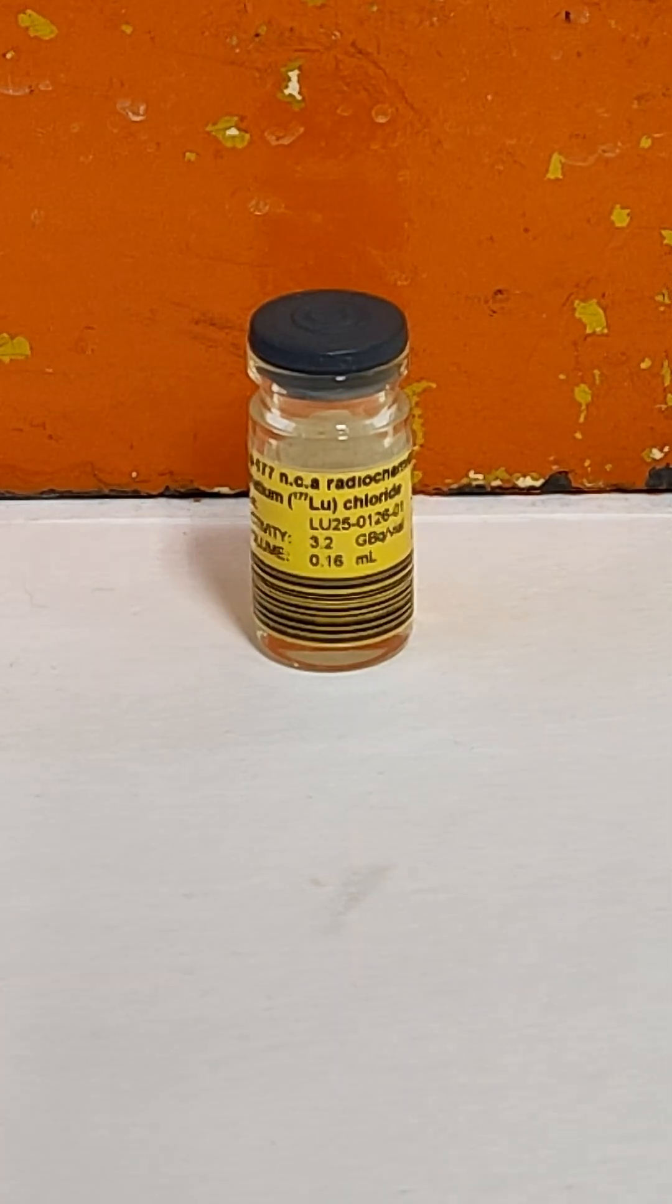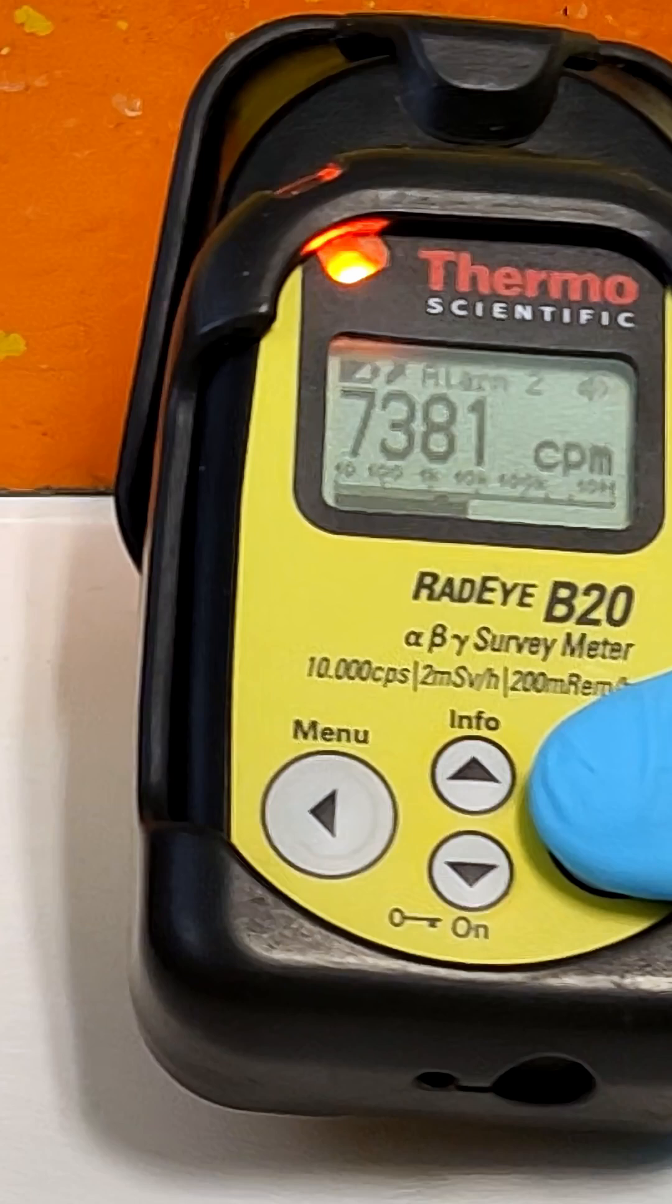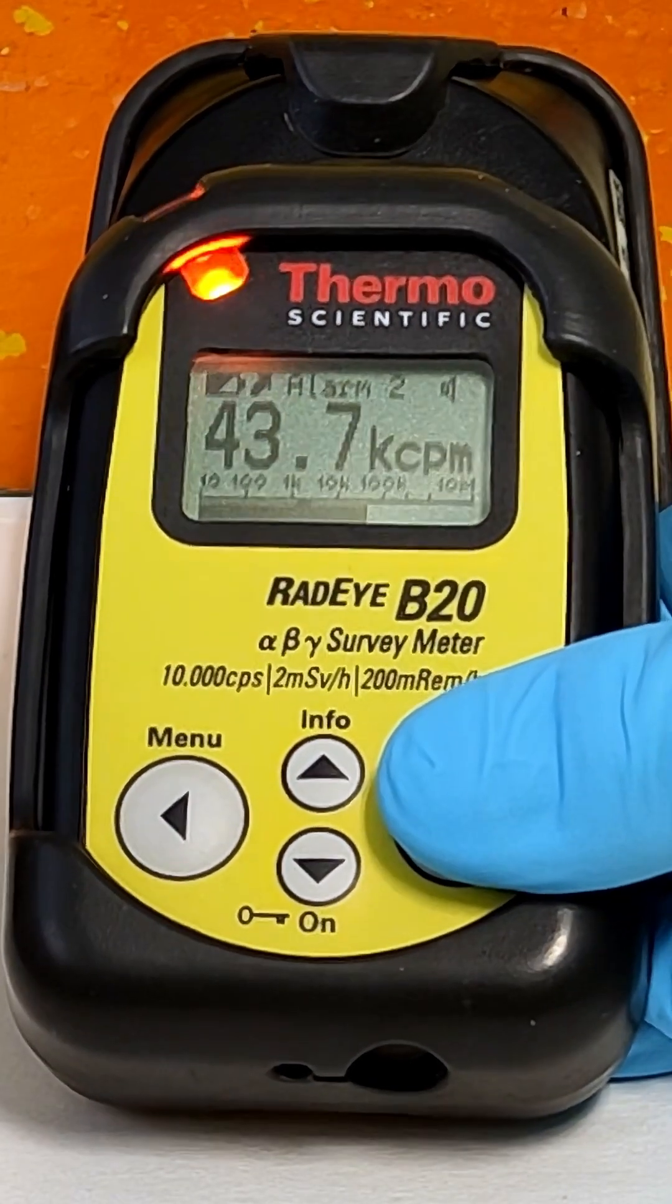Originally this vial contained 3.2 GBq of lutetium-177, however most of it has already been removed and now there are only traces left.